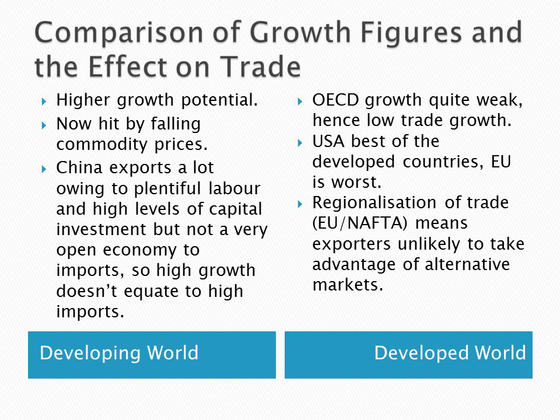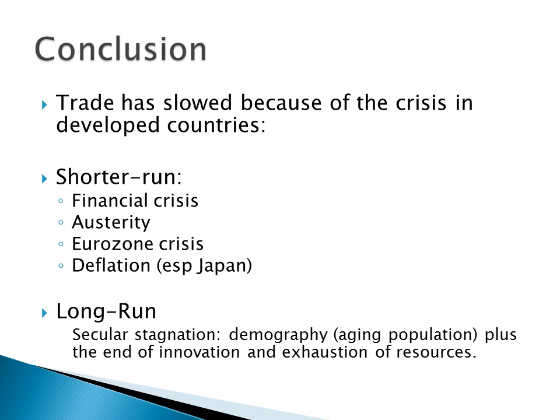Regionalisation of trade means it is very difficult for EU producers to find different markets — they are locked into the regional economic group through common external tariffs and free trade within the features of a customs union. Why has the volume of trade slowed? The shorter-run main points are the financial crisis, low aggregate demand, and austerity policies in European countries and Britain, which have reduced aggregate demand and hence demand for imports. We are all spending less so we all buy less from each other, hence lower trade growth. The Eurozone crisis in particular has been a real problem.